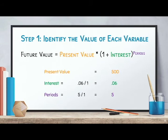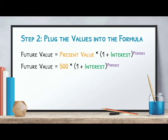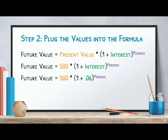Step two is simply plugging those values into the formula. Our present value is 500. Our interest rate is 0.06, so we have 1 plus 0.06 inside the parentheses. And our periods are five, so that becomes the exponent. Our future value formula is now: 500 times (1 + 0.06) to the fifth power.